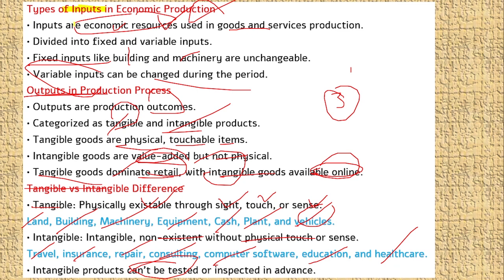Input are economic resources used in the production of goods and services. Output is the final outcome of the production.